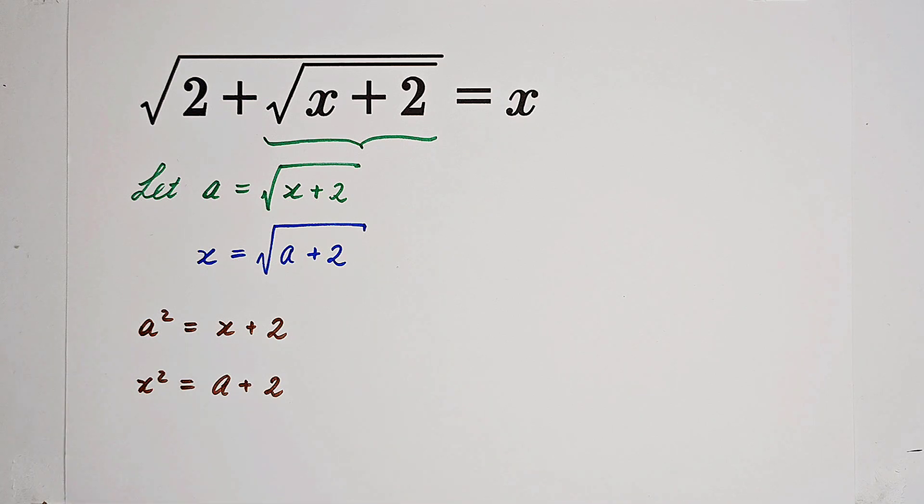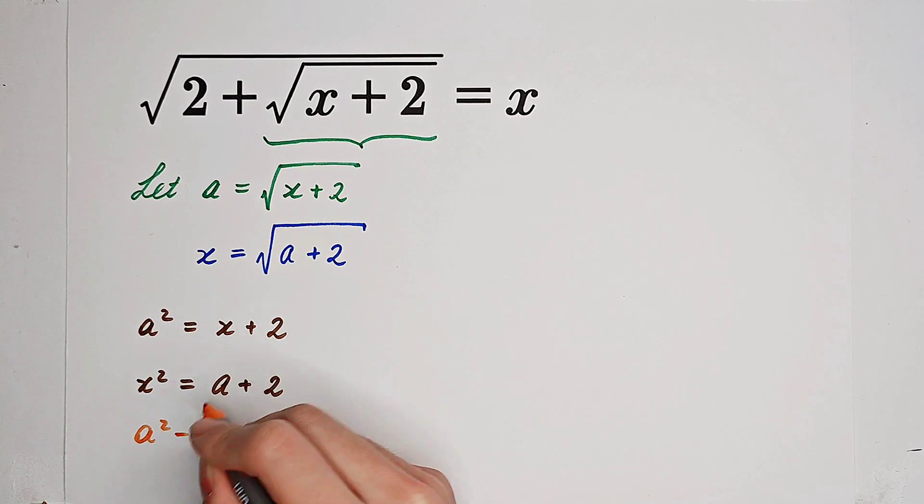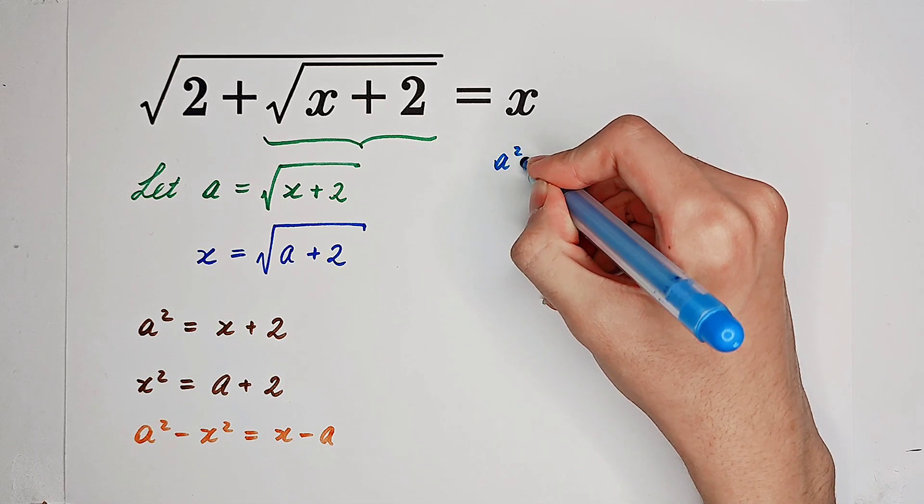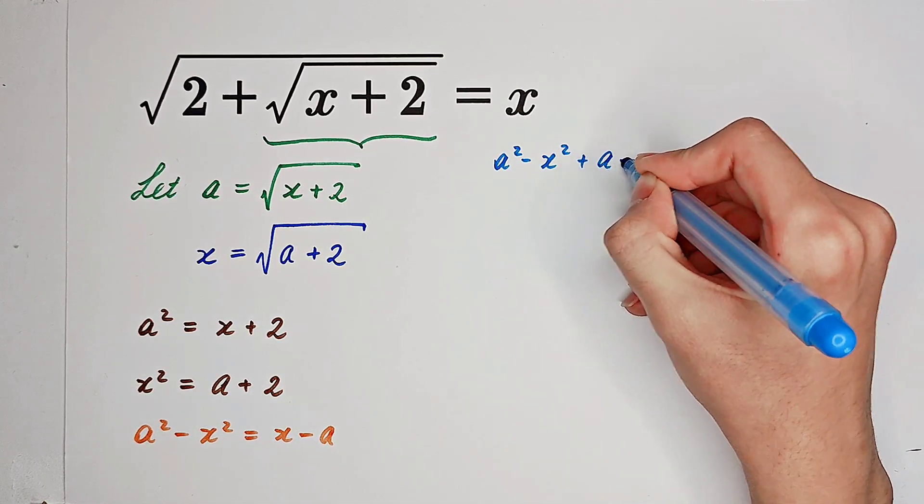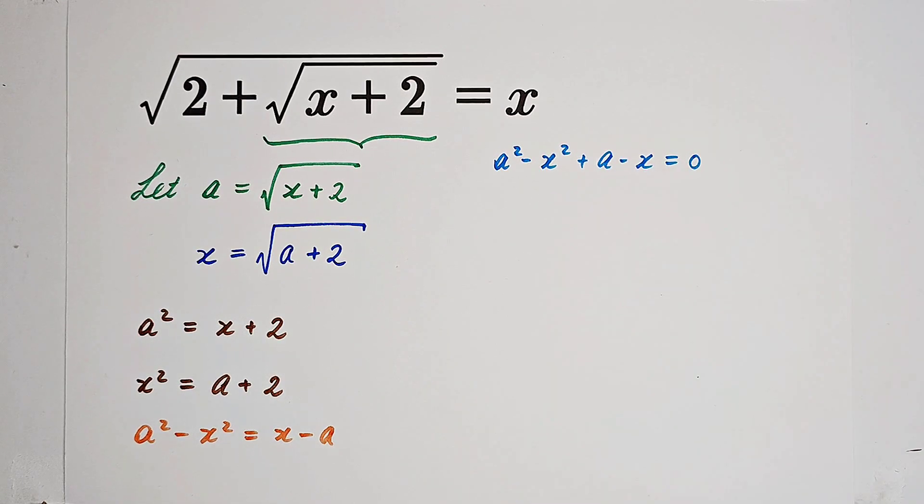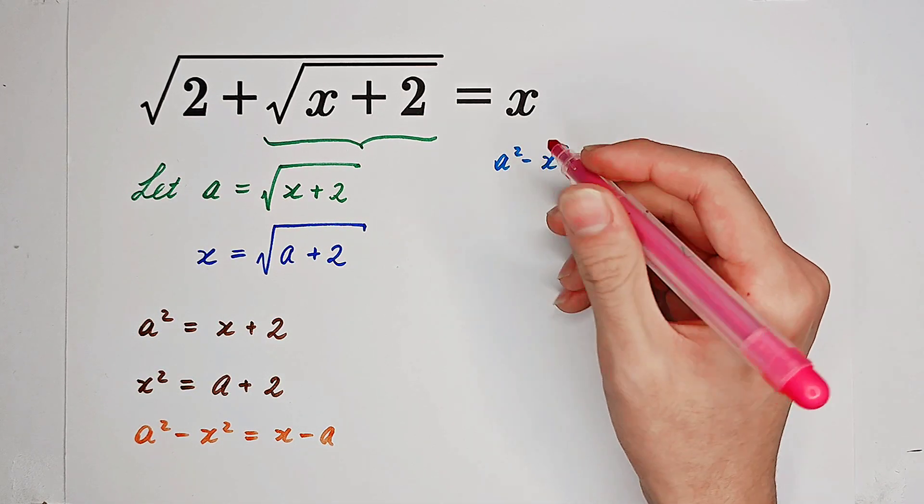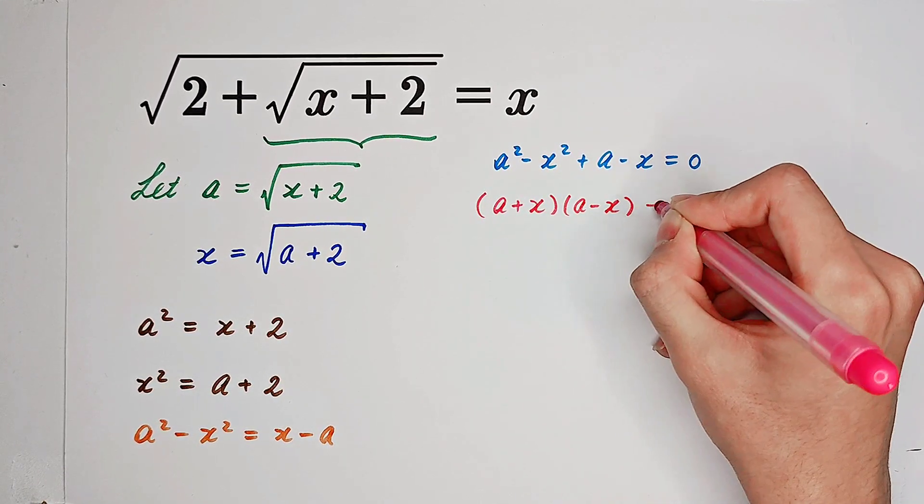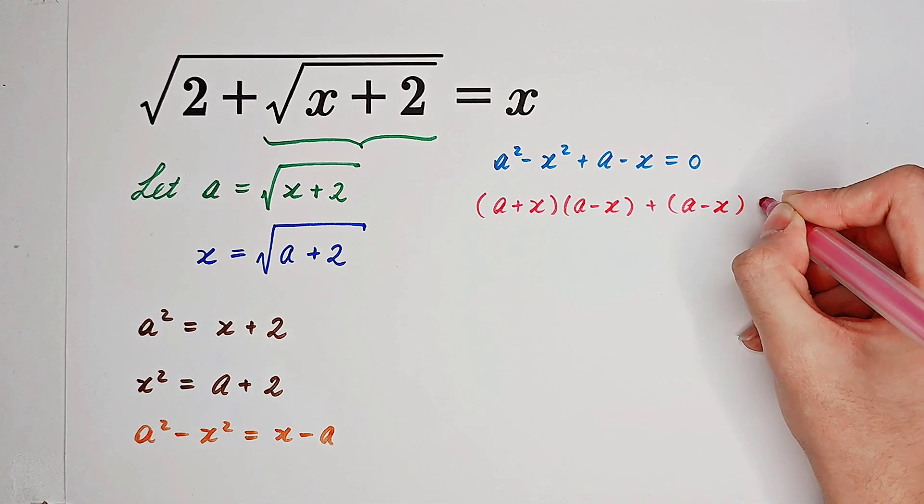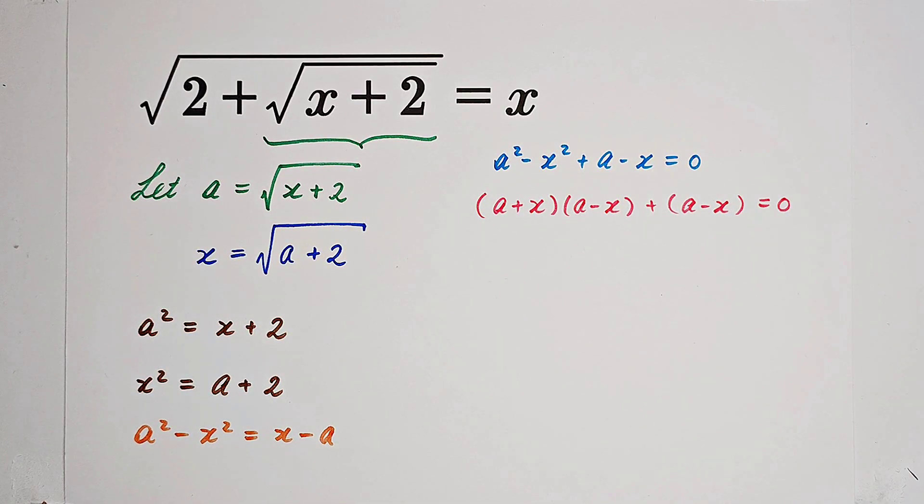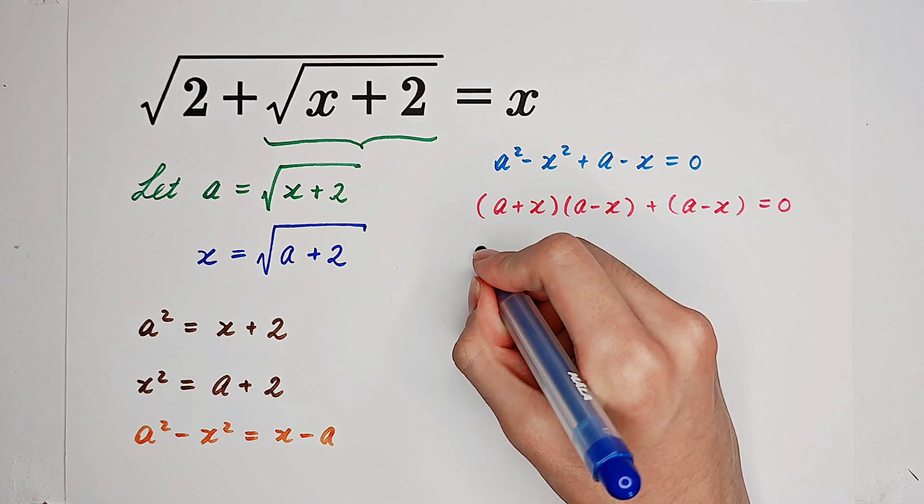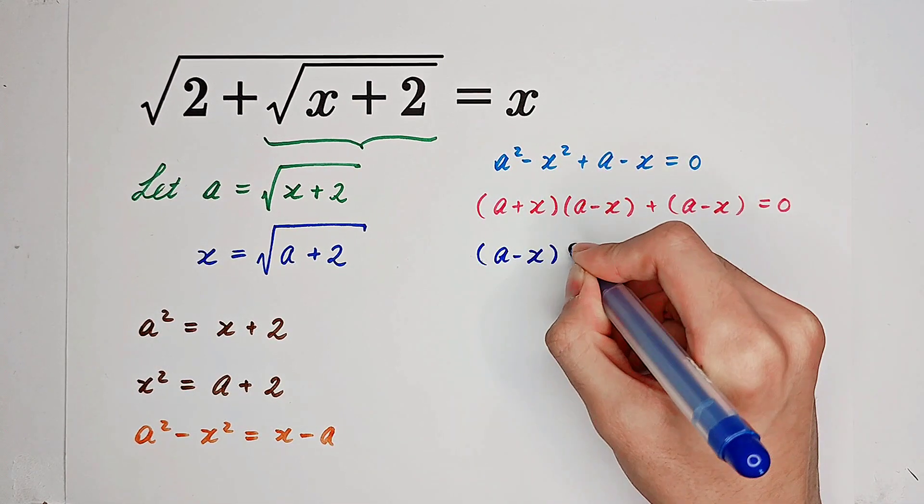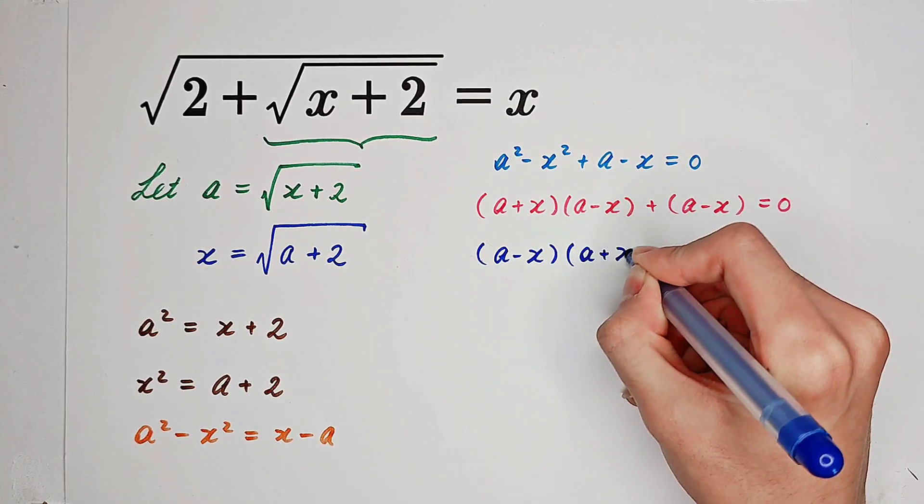Now subtract the second equation from the first one. Then we can get a squared minus x squared equals x minus a. So a squared minus x squared plus a minus x equals 0. And a squared minus x squared can factorize: it is a plus x times a minus x plus a minus x equals 0. Then we can take a minus x and in the bracket we have a plus x plus 1.